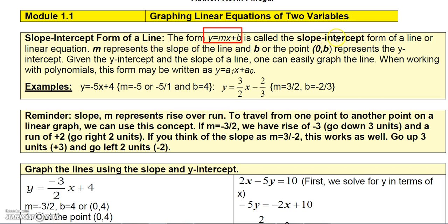M, the number m, represents the slope of the line, and b is the y-intercept, which represents the point (0, b) on the coordinate axis.